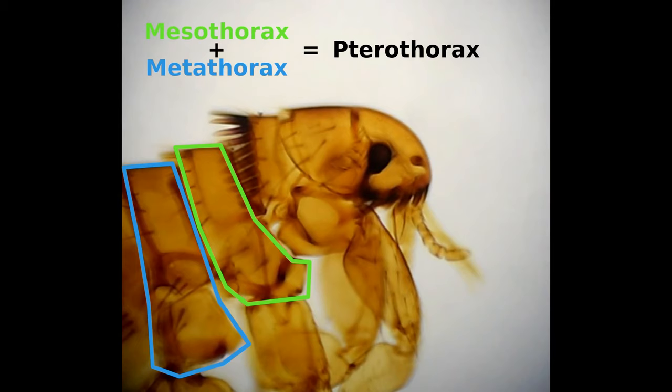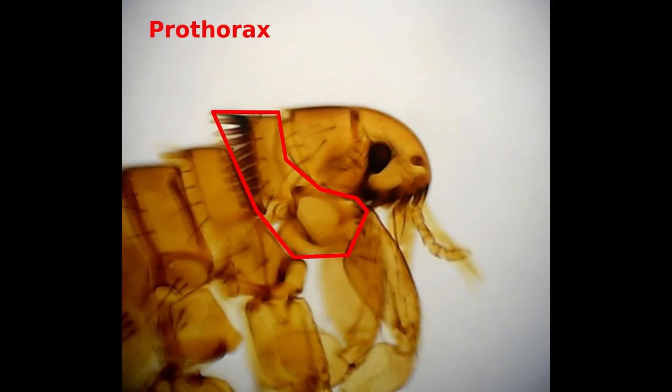The structure of the prothorax in fleas is very different to other insects. First of all, the prothorax is divided into three sections. The pronotum at the top, the propleuren in the middle, and the prosternum at the bottom.